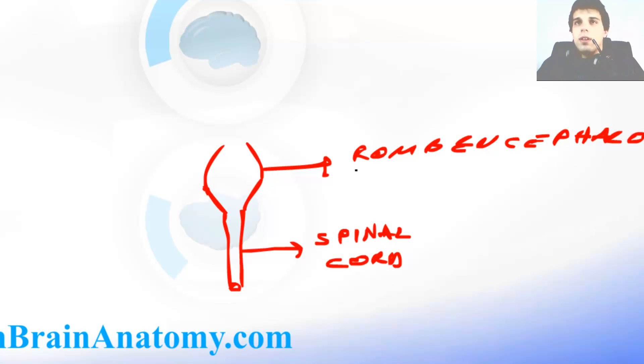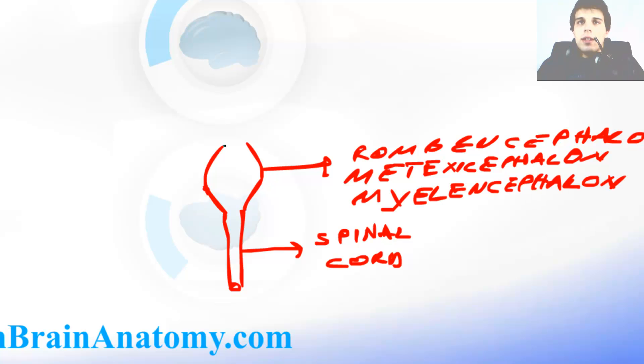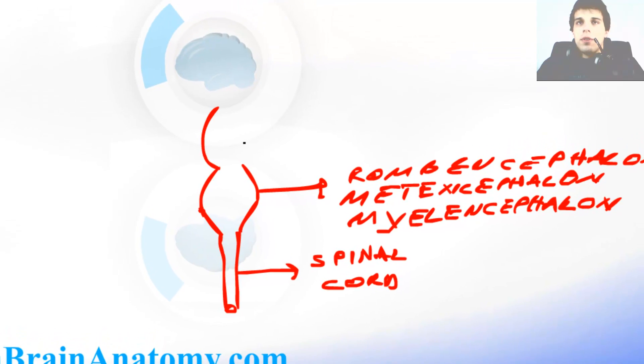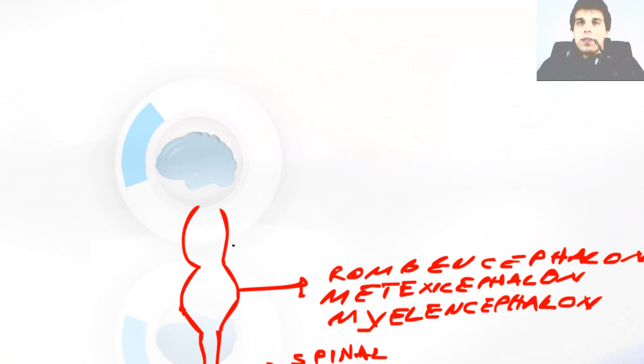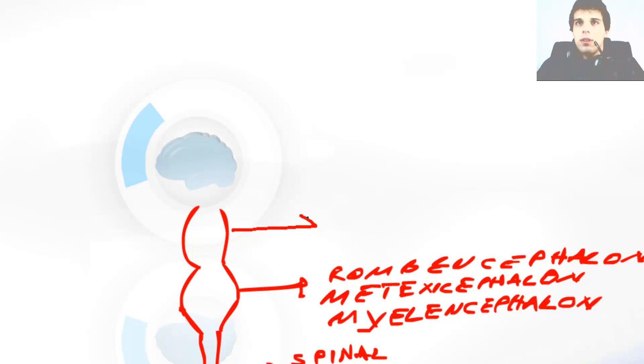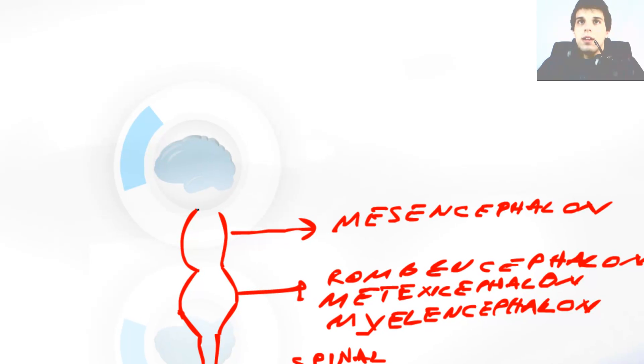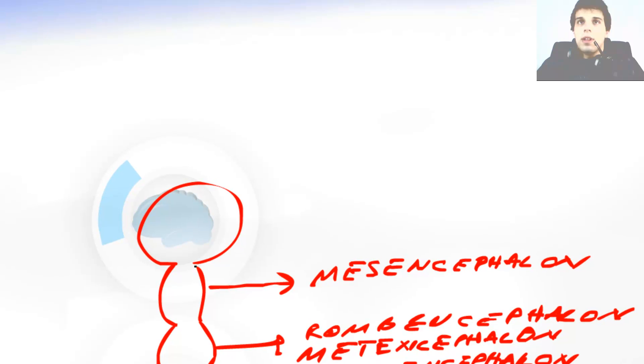The romancephalon consists of metencephalon and myelencephalon. Then there is one part of the neural tube that looks something like this and it's the part called the mesencephalon. I mean the mesencephalon is created out of this part. And at the end the last part looks something like this and out of that the prosencephalon is created.